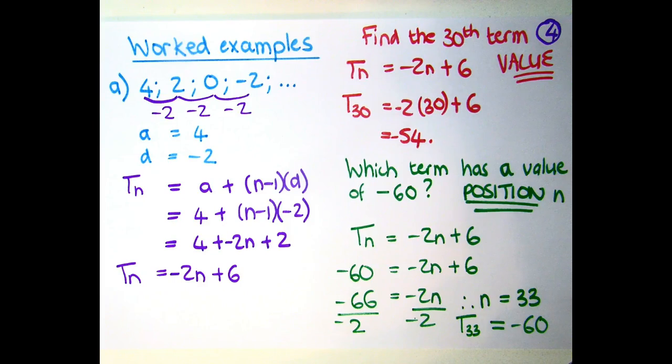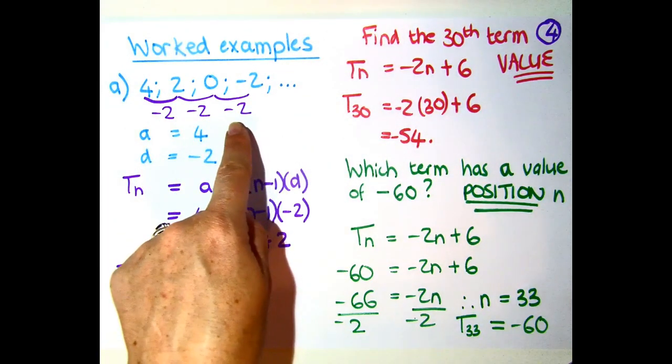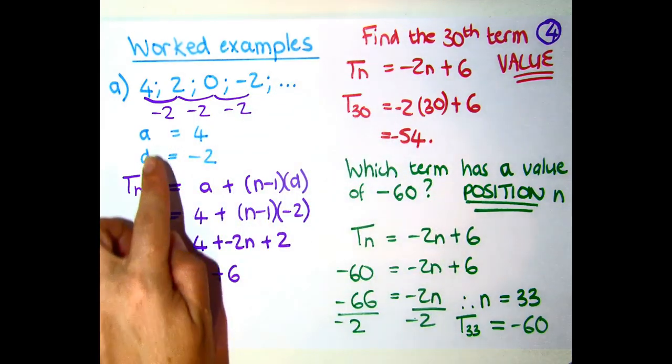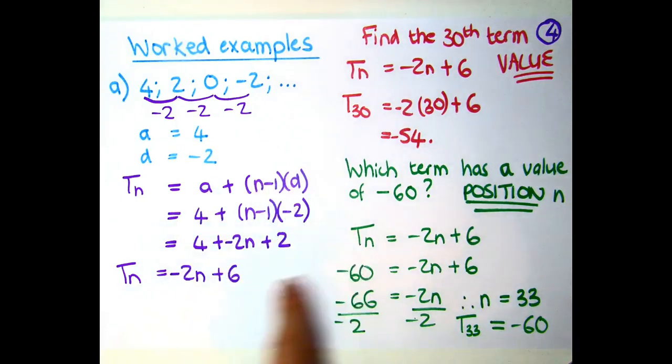In this example, the common difference is negative, which is important to be able to recognize when the pattern goes down. You then have your a value as 4 and your difference as negative 2. It works exactly the same way, but this time, what you'll see is the coefficient of n will be negative.